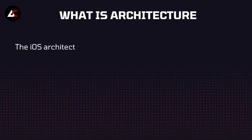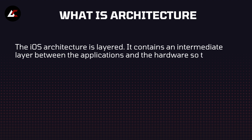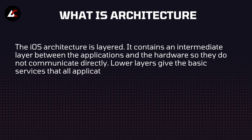What is Architecture? The iOS architecture is layered, meaning it is a combination of layers. It contains an intermediate layer between the application and the hardware, so they do not communicate directly. There is a layer that defines the architecture, and the hardware and application communicate through that layer.